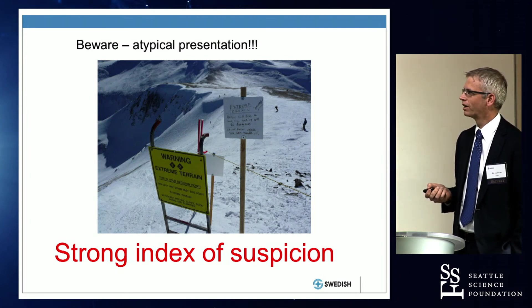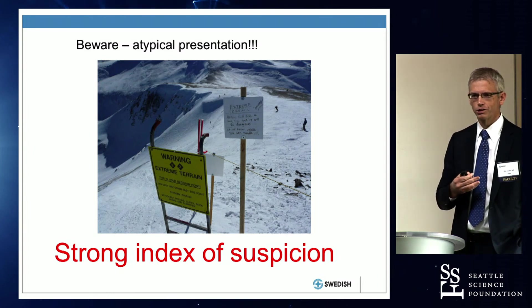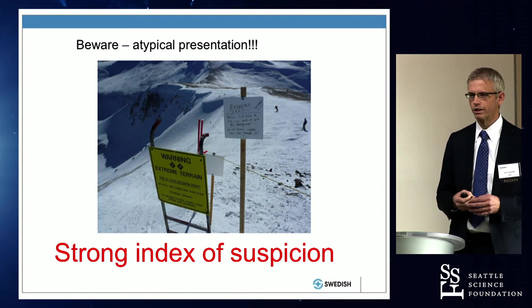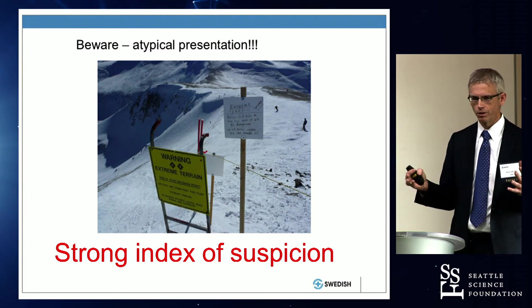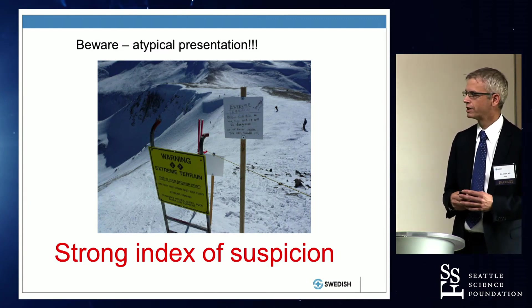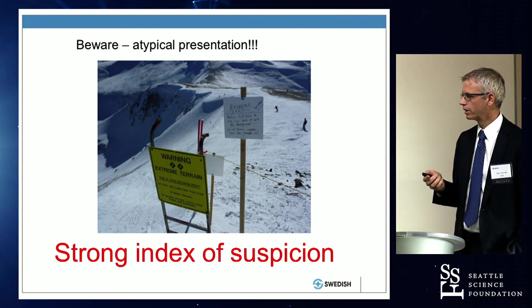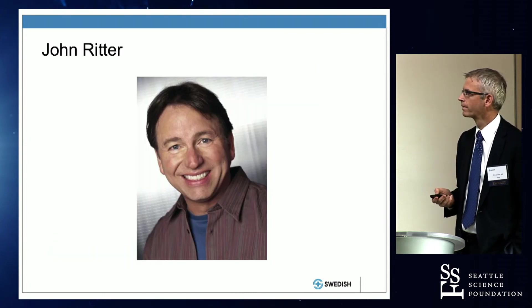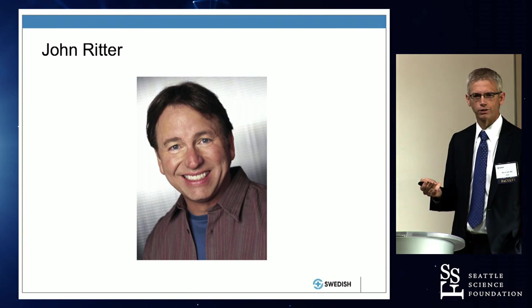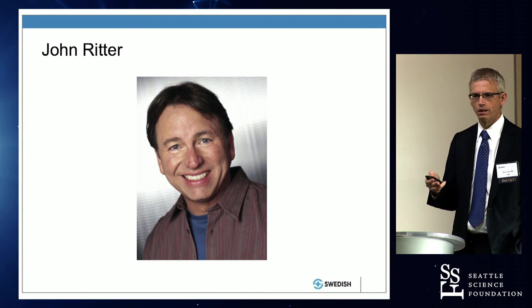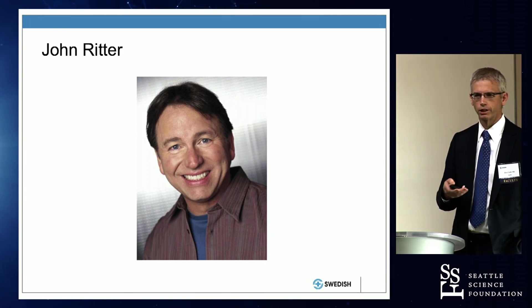We have to be really careful of atypical presentations. As surgeons, we have the patient presented to us and already know the diagnosis. But for the emergency physician it's really hard — they'll see probably 1,000 patients with chest pain and maybe one has a dissection. Some patients have atypical presentations, so we need a strong index of suspicion to avoid sending someone home with a dissection. This is John Ritter — he came in with some EKG changes, they thought he had coronary ischemia and treated him for that, but he ended up having a dissection found several days later. He underwent surgery but passed away.